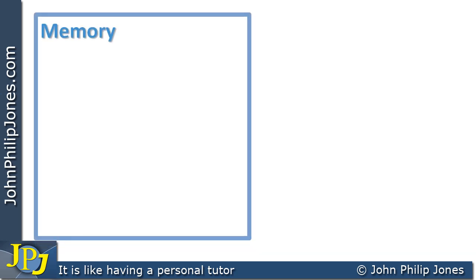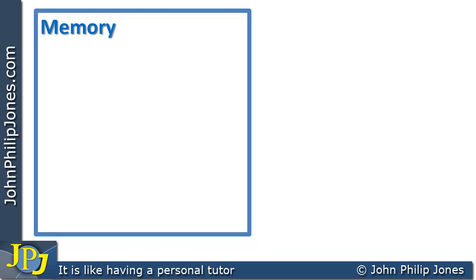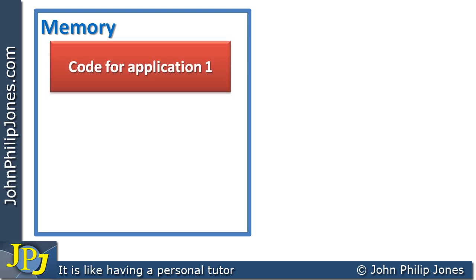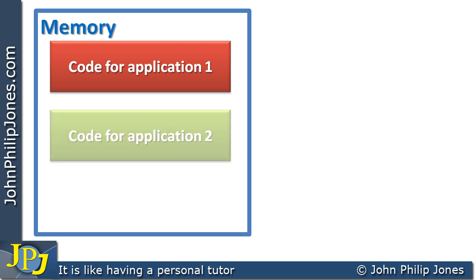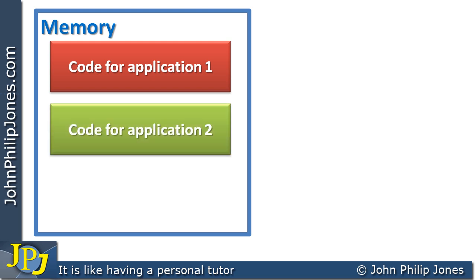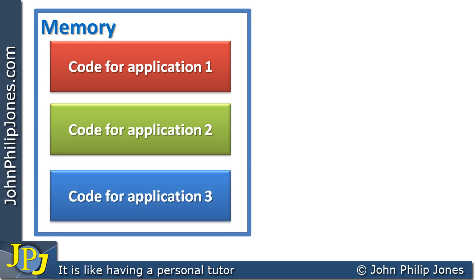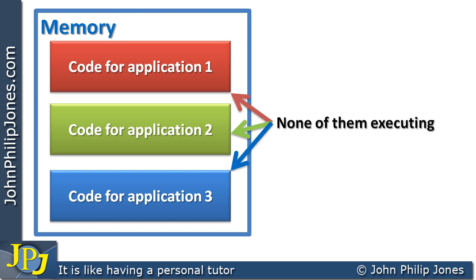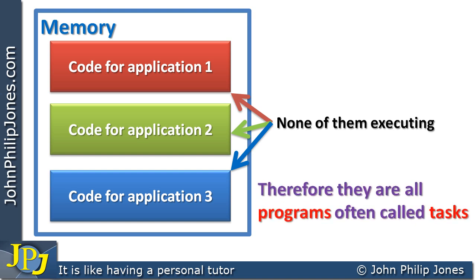Let's now focus on the memory of this computer system at a point in time where it has the code for application one — say a word processor — already loaded, code for another application such as a spreadsheet, and code for a third application such as a web browser. What we mean here is all of the machine code for each of these applications is loaded into particular memory locations. When they are sitting there as machine code and none of them is executing, we refer to these as programs — often called tasks in operating systems.